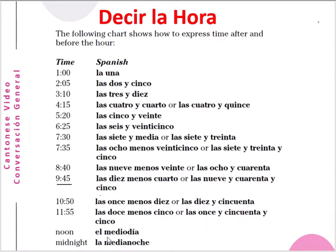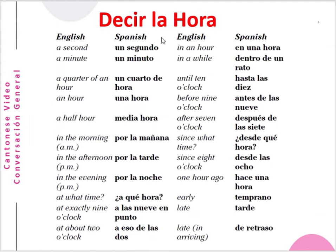At noon: el mediodía — and notice that for noon, a masculine article is used. And at midnight: la medianoche — the article is a feminine article. So you have to remember to change the article either to masculine or feminine, depending on the noun after the article.